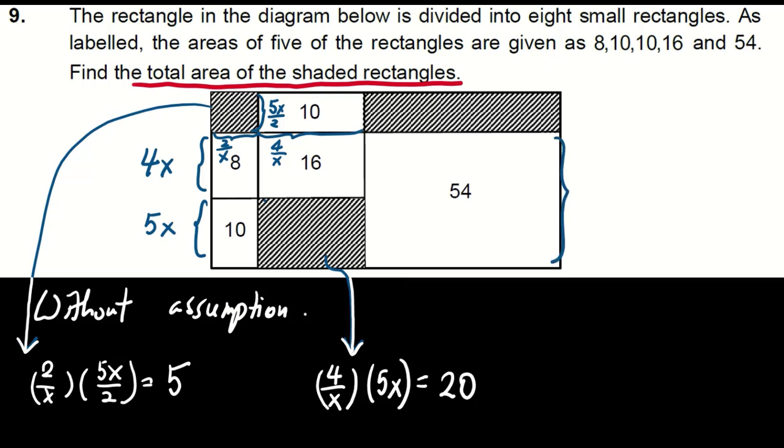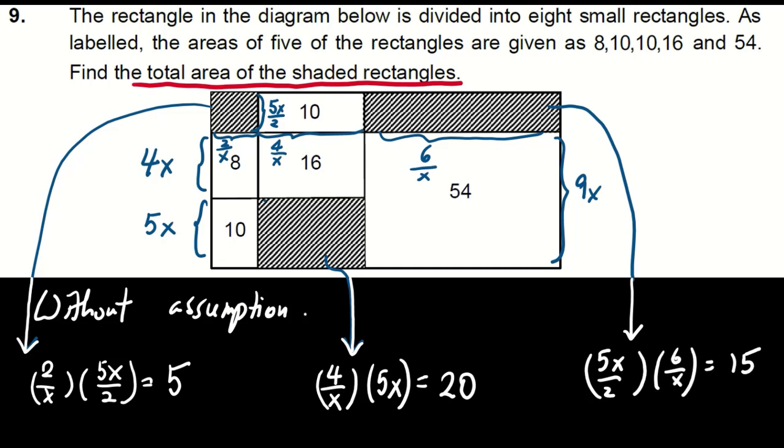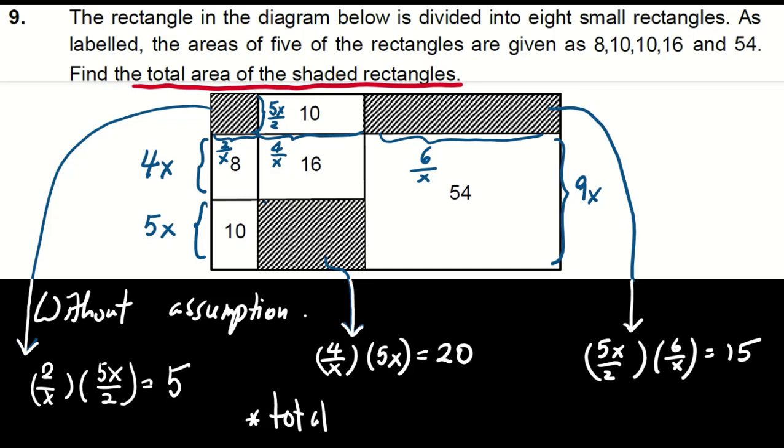Now looking at the rectangle with an area of 54. One side is 9x and the other side is 6 over x. So the area of the top right rectangle, 5x over 2 times 6 over x, giving 15. This tells us the total area is 40.